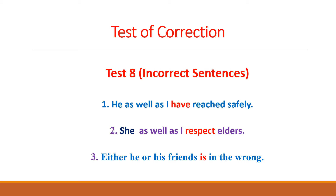Let us begin from sentence number 1. In this part, we will have the incorrect sentences. You are required to write down these sentences in your notebook. Then I will give you time to correct them. After correcting them in your notebook, look at the second part of this lecture to check whether the sentences you have written are correct or incorrect.